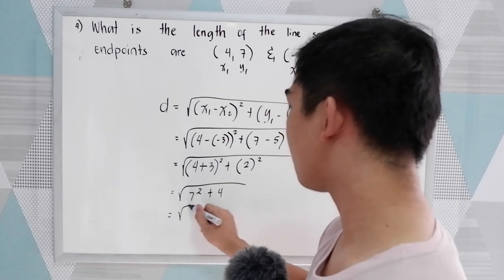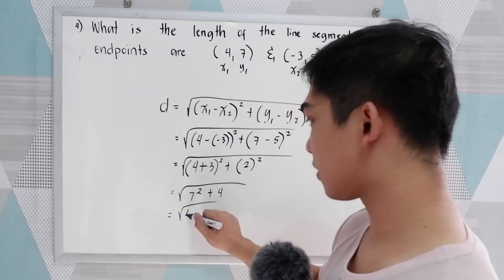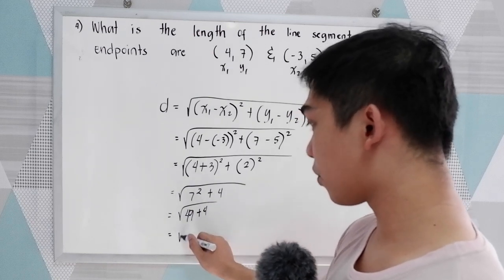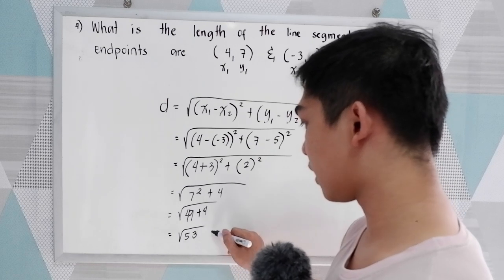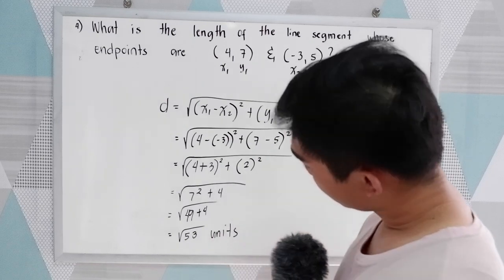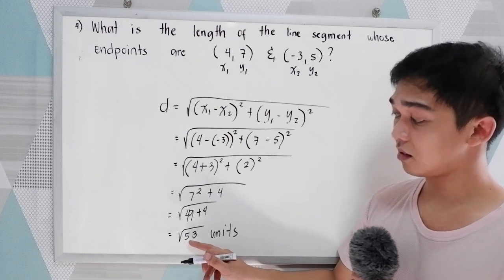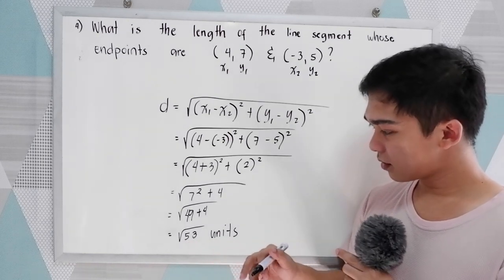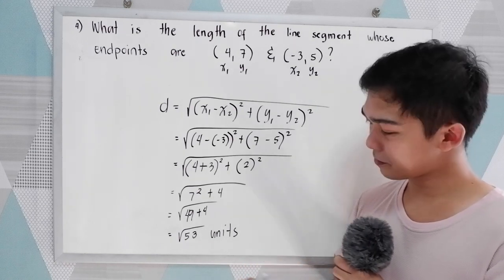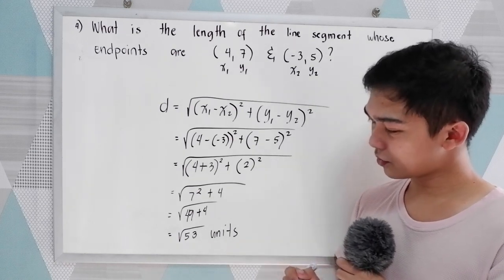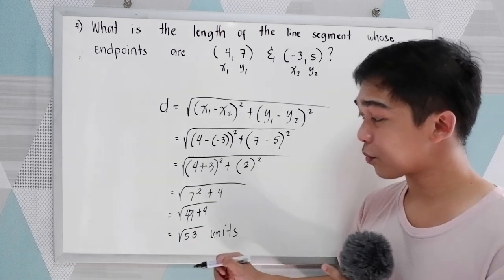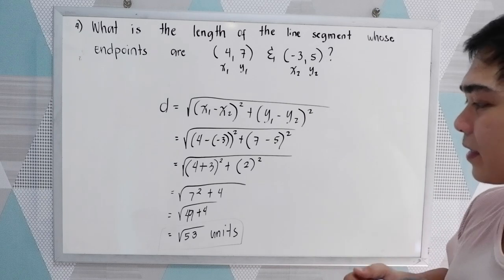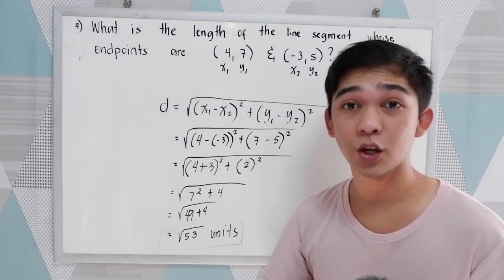So 49 plus 4 gives us the square root of 53 units. Checking whether 53 can be simplified: one factor must be a perfect square number. Since 53 has no such factor, this is our final answer. The distance of the line segment is √53 units.